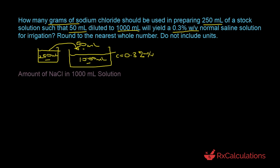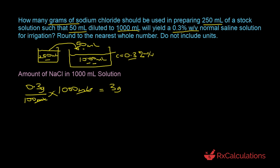For the amount of sodium chloride in the 1000 milliliters solution: 0.3% weight by volume means 0.3 grams of sodium chloride in 100 milliliters. We have 1000 milliliters, so multiply: 0.3 grams divided by 100 milliliters times 1000 milliliters. The milliliters cancel and you get 3 grams of sodium chloride in the 1000 milliliters solution.